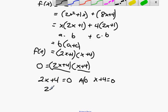Let's see. 2x equals negative 4. Therefore, if I divide both sides by 2, I get x equals negative 2. Here, all I have to do is subtract 4 from both sides, and I get x equals negative 4. There are my zeros for that specific function.